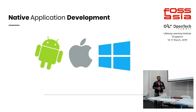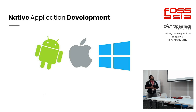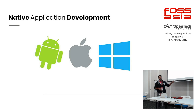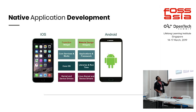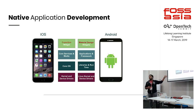When it comes to mobile application development, we have three platforms. We have Android, which released their SDK back in 2009. We have iOS, which released their first SDK back in 2008. And Windows — we have quite a very low number of developers for Windows. So I'll only talk about Android and iOS, because these are the major platforms that we are using today.